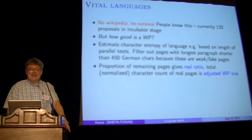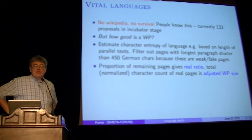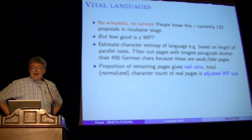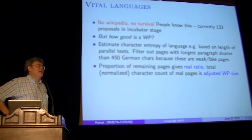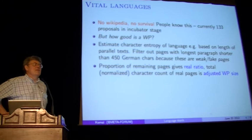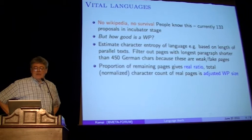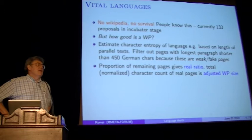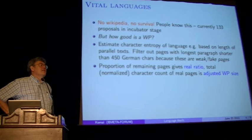The proportion of the remaining pages gives the so-called real ratio — so-called because the pages which don't meet this threshold and don't have a long paragraph tend to be fake, very weak pages. They are often listed in Wikipedia as being in some early stage of development, and you cannot really get information out of them. So this is the real ratio. Then you take all those pages which are real, add up their normalized character counts, and this gives you the adjusted Wikipedia size, which can differ quite a bit from the superficial Wikipedia size.